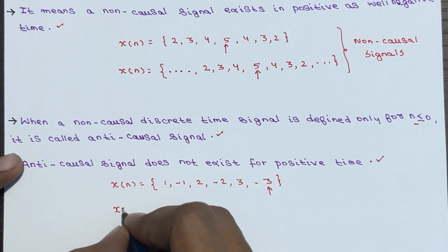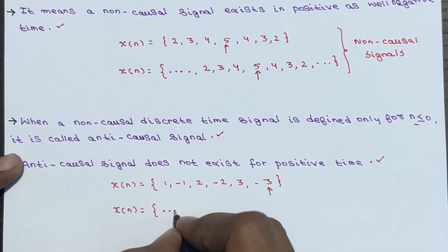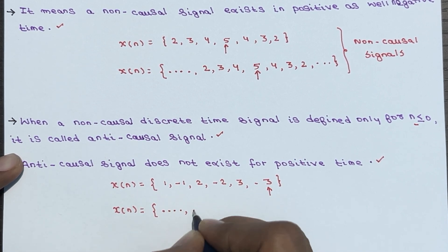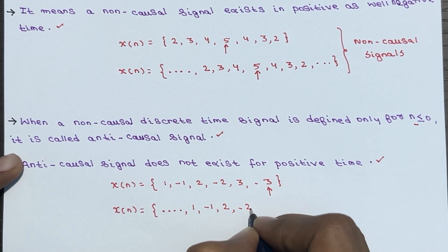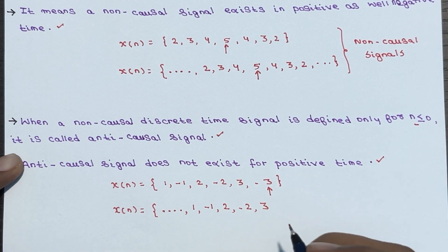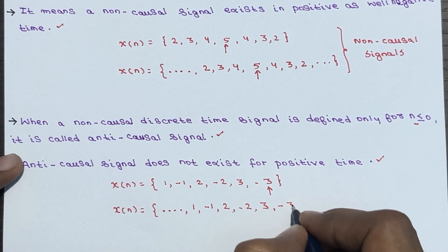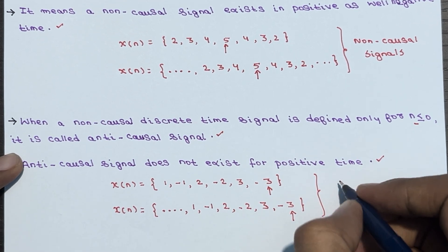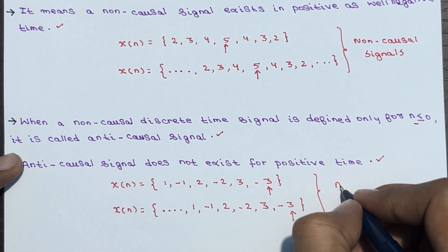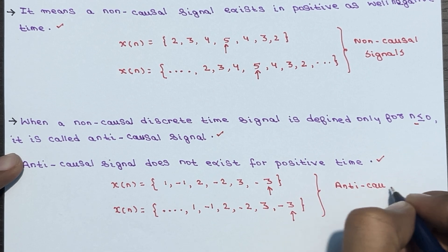For the infinite duration example: 1, minus 1, 2, minus 2, 3, minus 3, and so on. These two are anti-causal signals.